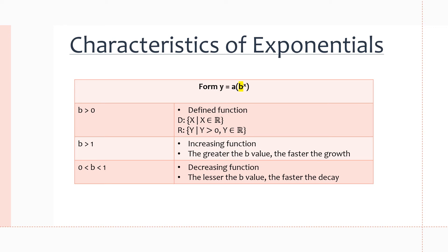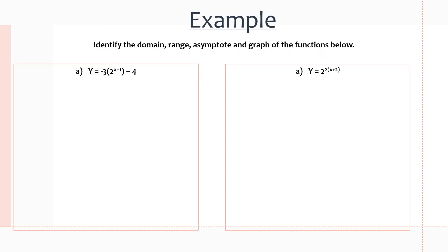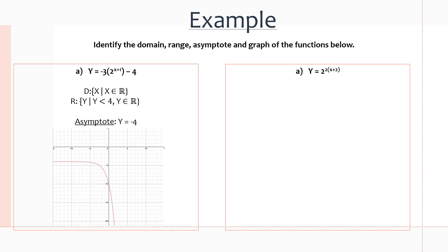We're going to solidify this with some examples. We're going to identify the domain, range, asymptote, and graph of the function. In this particular function, the domain is x is an element of the reals, but the range is y is less than negative 4, because of the negative 4 at the end of the equation — it's a translation of 4 units down. That moves the asymptote to y is equal to negative 4, as you can see in the graph. There's an asymptote at y equal to negative 4, meaning it doesn't actually touch that line. That's why it's y is less than negative 4 and not less than or equal to, because it doesn't actually touch the asymptote.